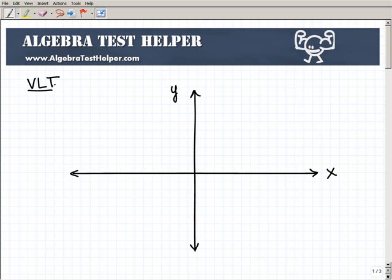And the vertical line test is a test that we use when we're studying functions and relations. So in math, a function is a particular type of relation.